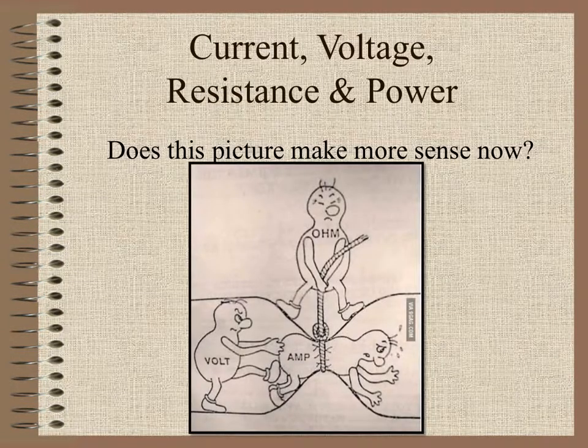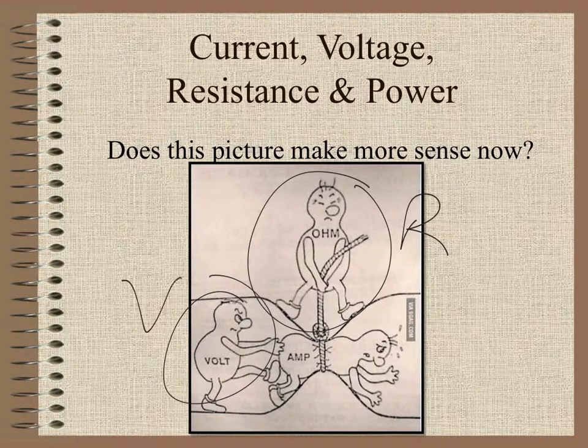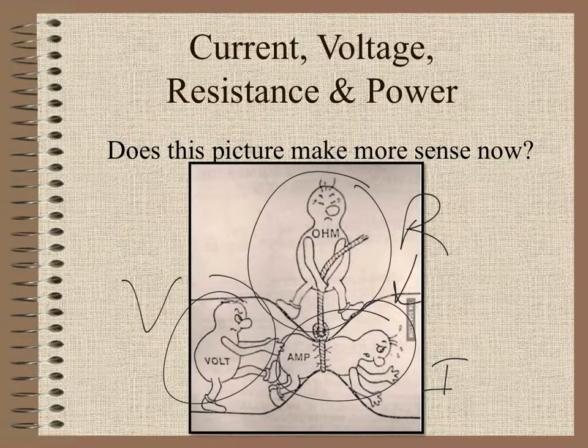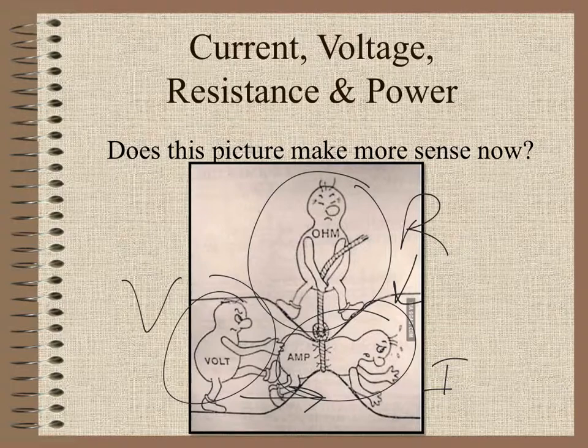If you take a look at this picture that we started with, if this is your resistance, and this is your voltage, and this is your current, you can see that resistance is going to slow down current while he's tying them up. But voltage is trying to speed along current and push it forward. So, resistance and voltage work against each other. One helps current, and one hurts current.